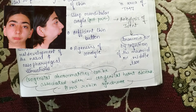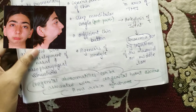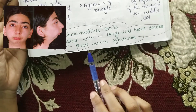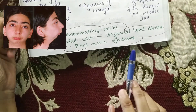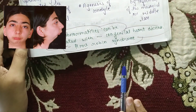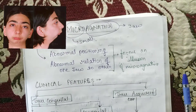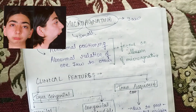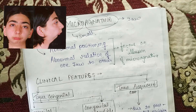Congenital abnormalities can be associated with congenital heart disease or Pierre Robin syndrome. That is all about micrognathia. I hope this video will add some value in your academics, and if you like this video then hit the subscribe button — thank you so much for watching.